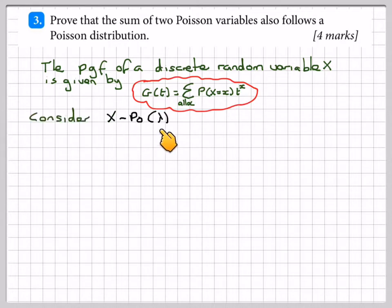So consider x belonging to a Poisson distribution lambda. The probability that x equals x is lambda to the power of x times e to the minus lambda over x factorial.